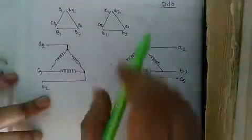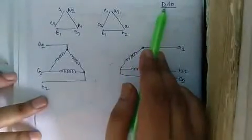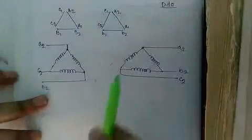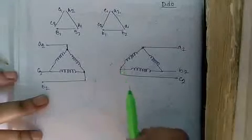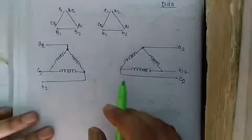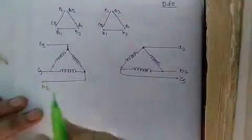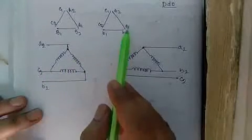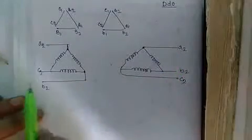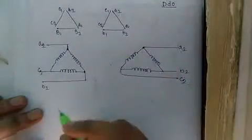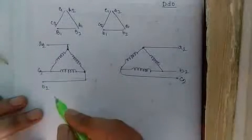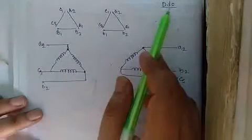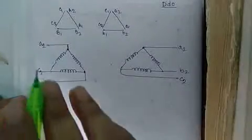Next is DD0 — capital D, small d, zero — delta-delta zero. Here also the phase displacement angle is zero. The line EMF A2, B2 of LV side — small a2, b2 — is in phase with the HV side line EMF A2, B2. So the displacement angle is zero.